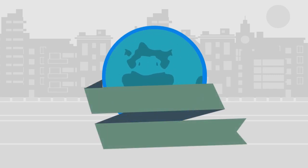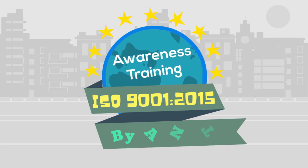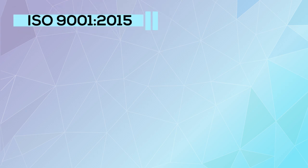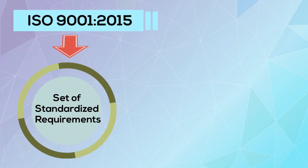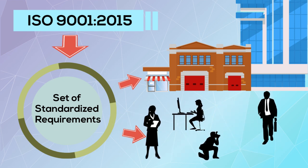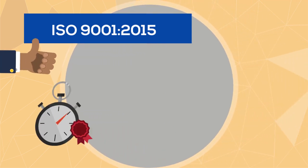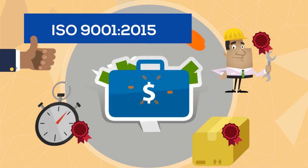Welcome to the ISO 9001 Awareness Training, brought to you by ANTSCorp. ISO 9001:2015 provides a set of standardized requirements for a quality management system, which is flexible enough to be used for all sizes and kinds of businesses. Using ISO 9001:2015 helps ensure that customers get consistent, good quality products and services, which in turn brings many business benefits.